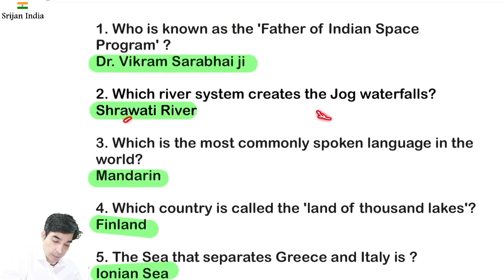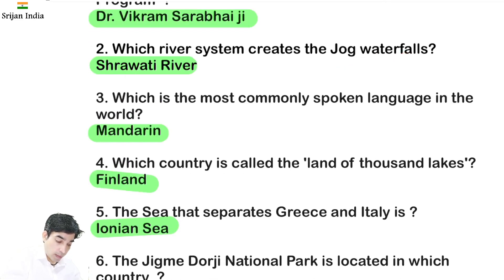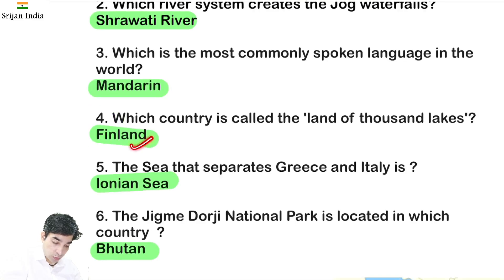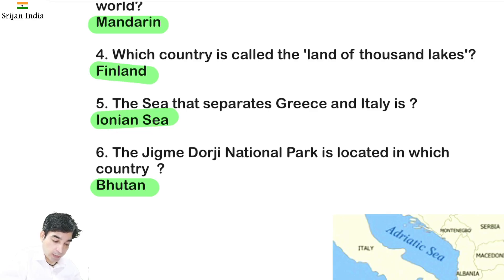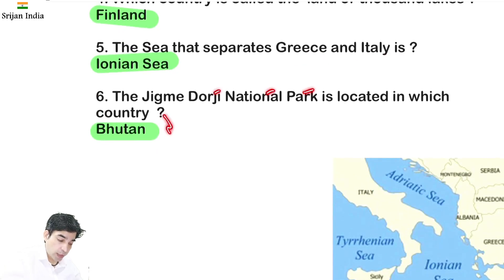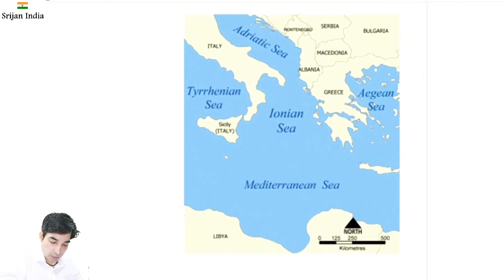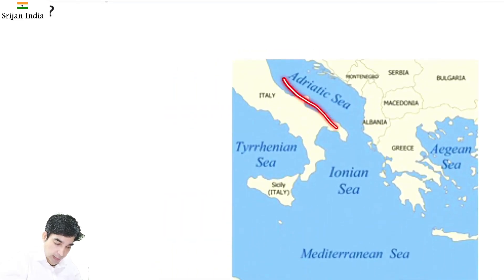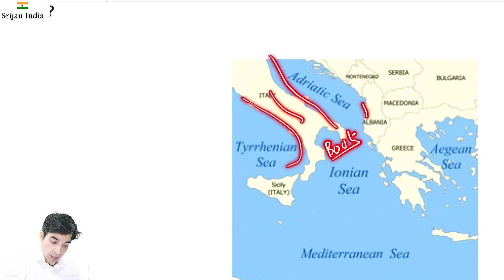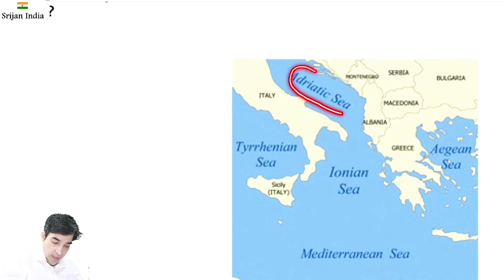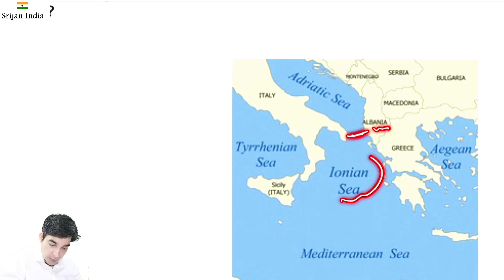Shravati river pe hai Jog Waterfall. Mandarin Chinese is the most commonly spoken language in the world. Finland ko bolte hai Land of Thousand Lakes. Ionian Sea ye separate karata hai Greece ko aur Italy ko. Italy ka jo shape hai, ye boot-shaped country bolte hai. Ye Adriatic Sea yahan pe hai, Albania ke paas.